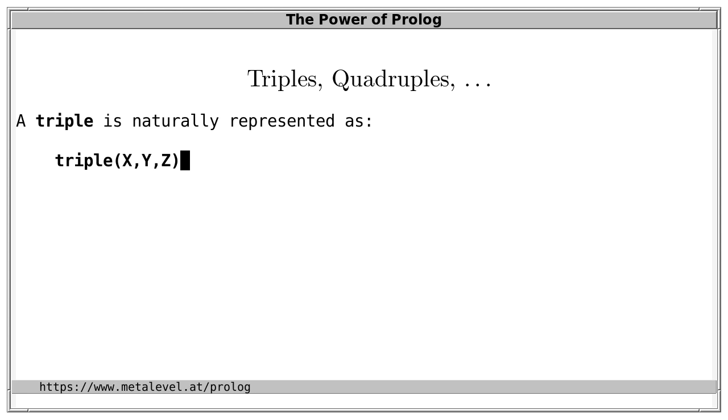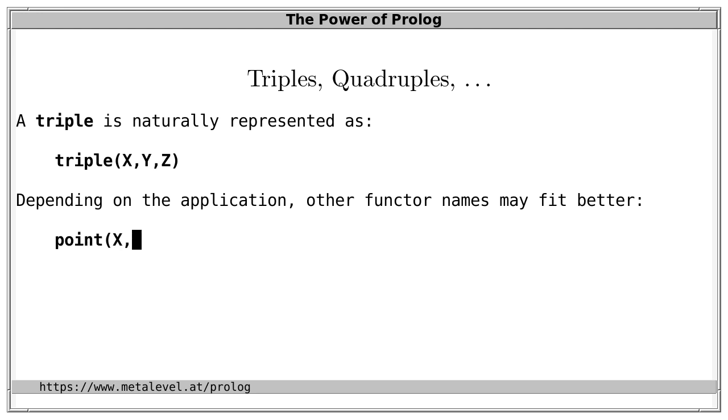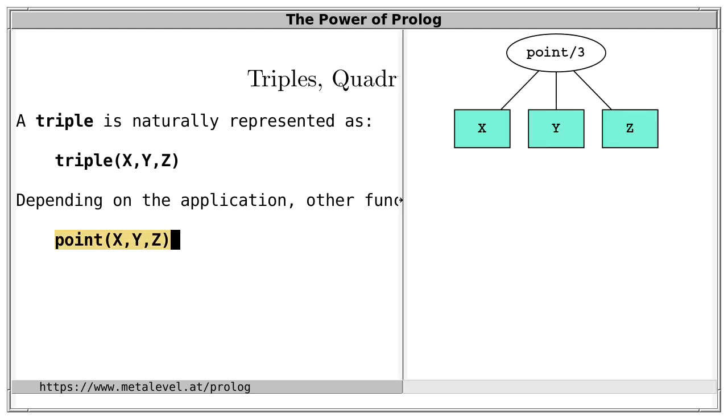Of course, also in the case of triples, depending on the application, other functor names may fit better because they are more descriptive. For instance, in geometric applications, point of x, y, and z could be a good choice. That's a term with functor name point and three arguments.